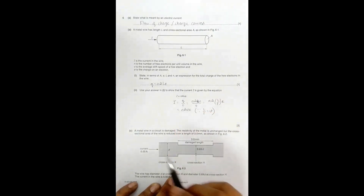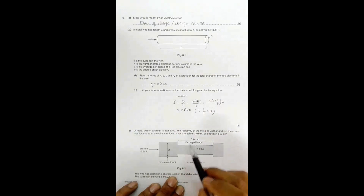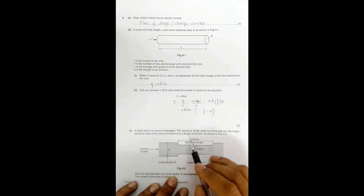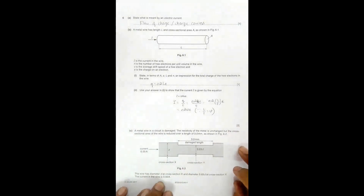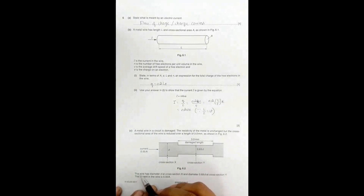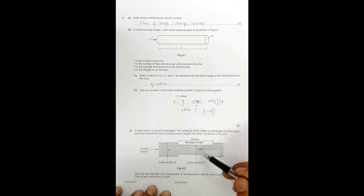Now, in part C, it says a metal wire in a circuit is damaged. The damage is such that the diameter has decreased over a length of three millimetres, but the resistivity of the metal remains unchanged because it is the same material. The cross-sectional area of the wire is reduced over this three-millimetre length, as shown in figure 6.2.